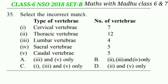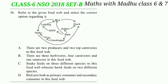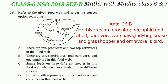Now question 36. Refer to the given food web and select the correct option. Option A states there are two producers and two top carnivores in this food web - this is incorrect because there is only one producer, which is the plant. Option B states there are three herbivores, four carnivores and one omnivore in this food web - this is the correct option. The carnivores are hawk, ladybug, snake and grasshopper, and there is only one omnivore which is bird. So the correct answer will be option B.